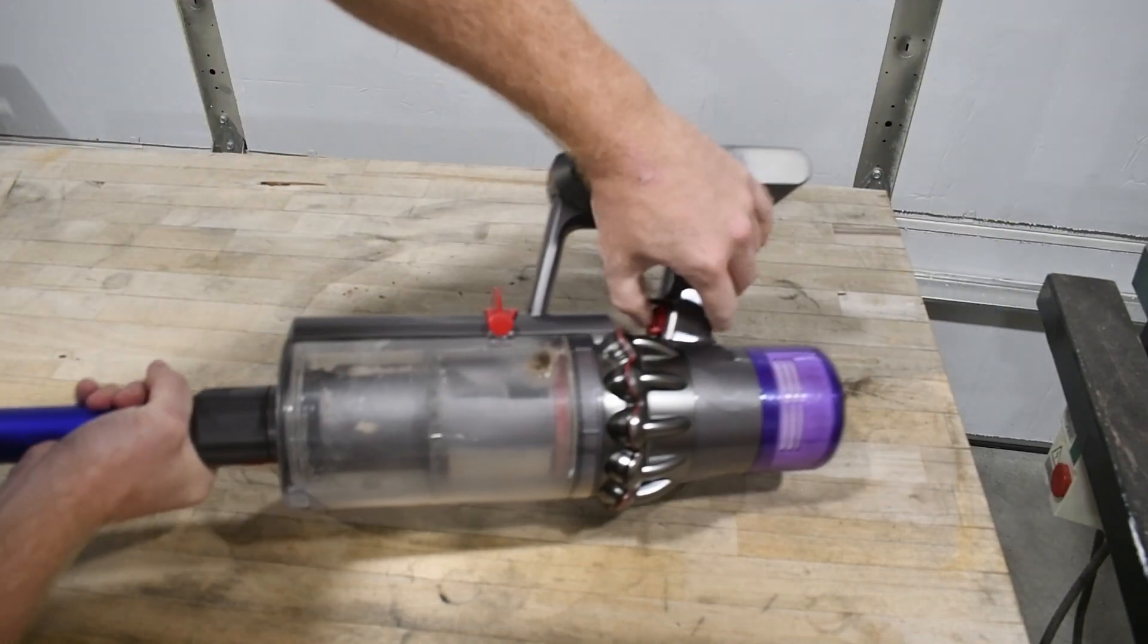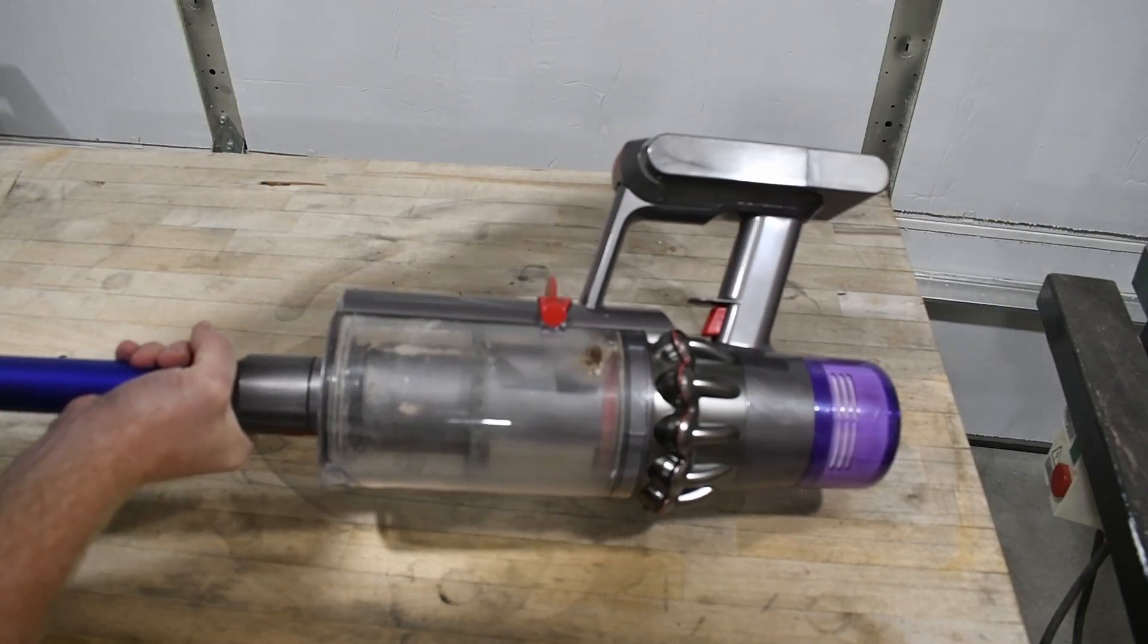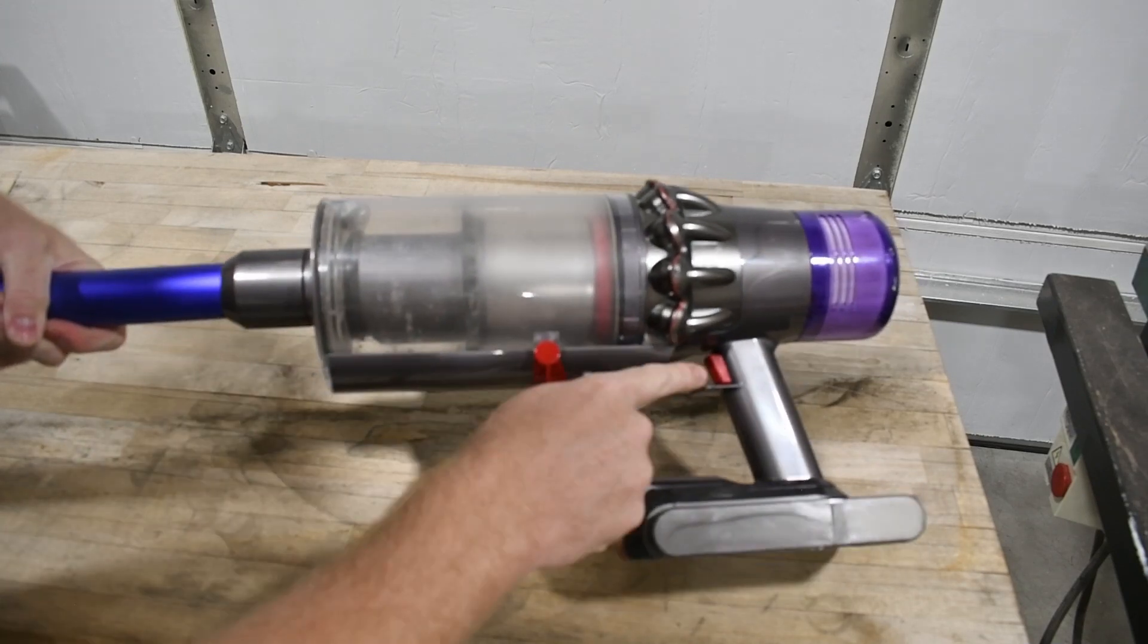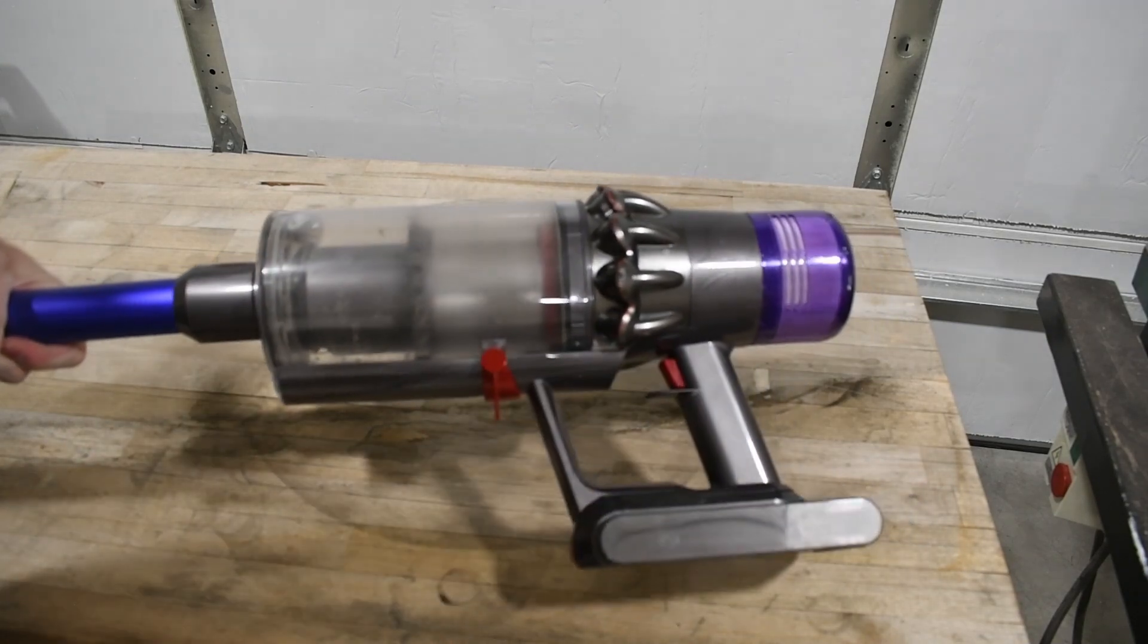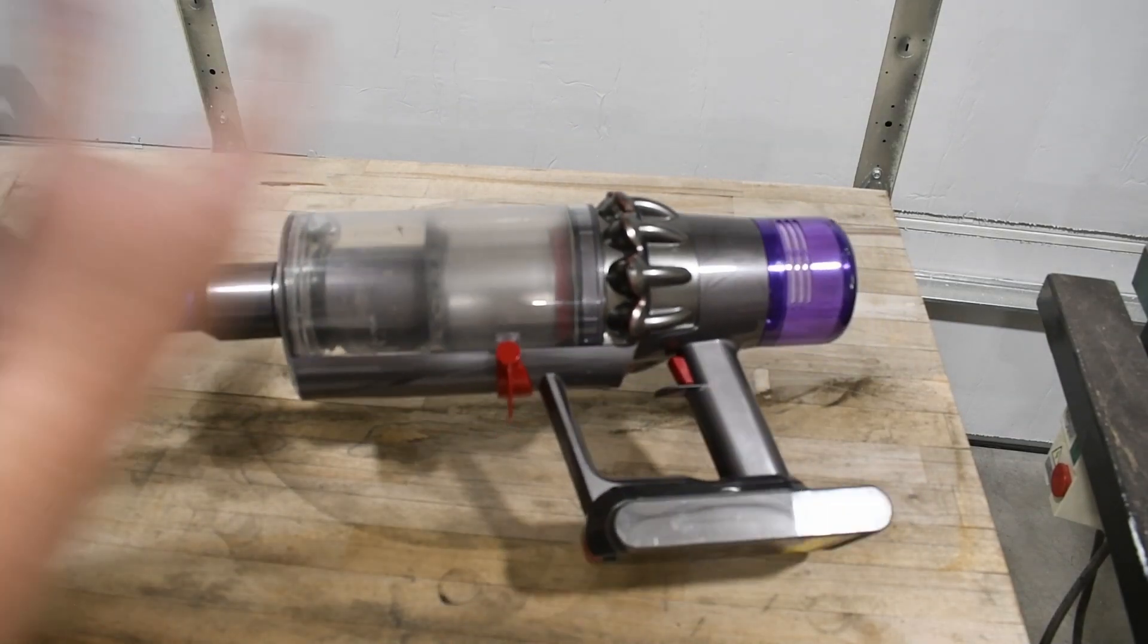What about this? Turn it on. Let it go. It shuts off. No trigger lock. That's a problem. Got to hold that down the entire time you're vacuuming. So I'm told. So we're going to fix that today.